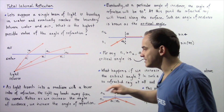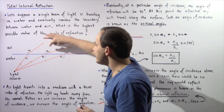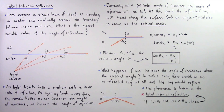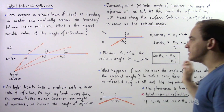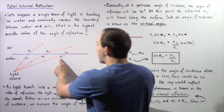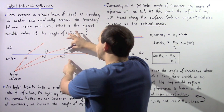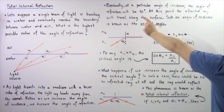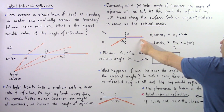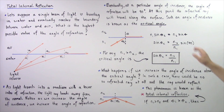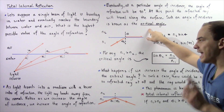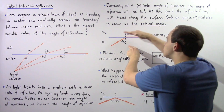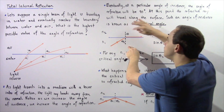Notice that as we increase the angle of incidence, theta_i, we increase the angle of refraction. Eventually, at a particular angle of incidence, the angle of refraction will be exactly 90 degrees. Continuing to increase the angle of incidence, this angle will reach 90 degrees, meaning the refracted ray of light will travel directly along the surface of the water — directly along the boundary line. Such an angle of incidence is known as the critical angle. When the angle of incidence equals the critical angle, the refracted ray travels along the surface of the boundary at 90 degrees.